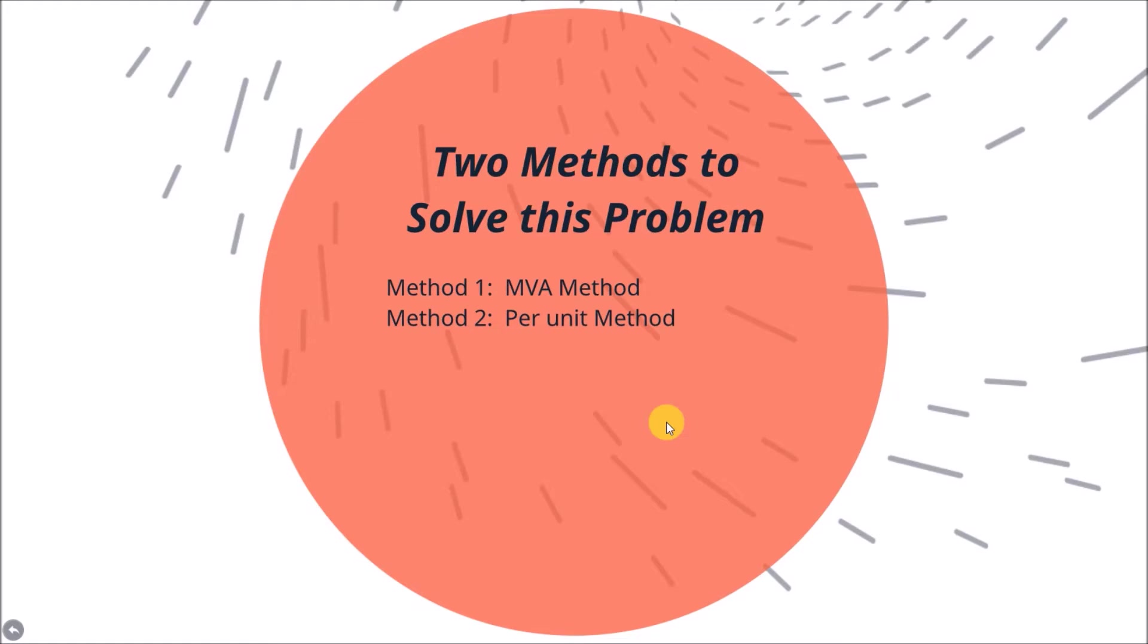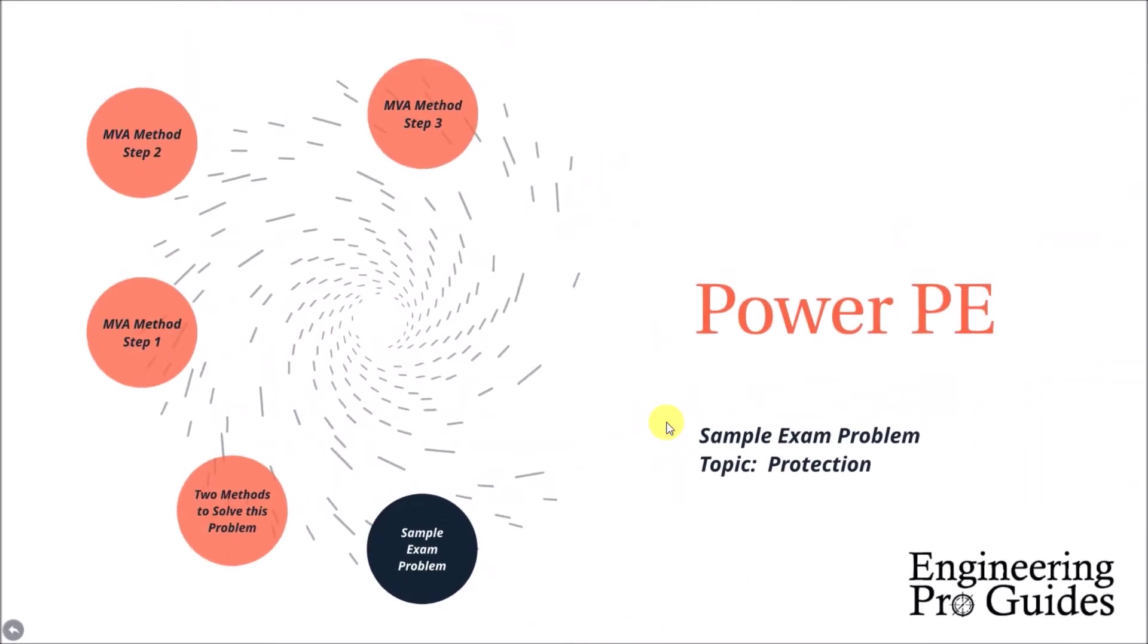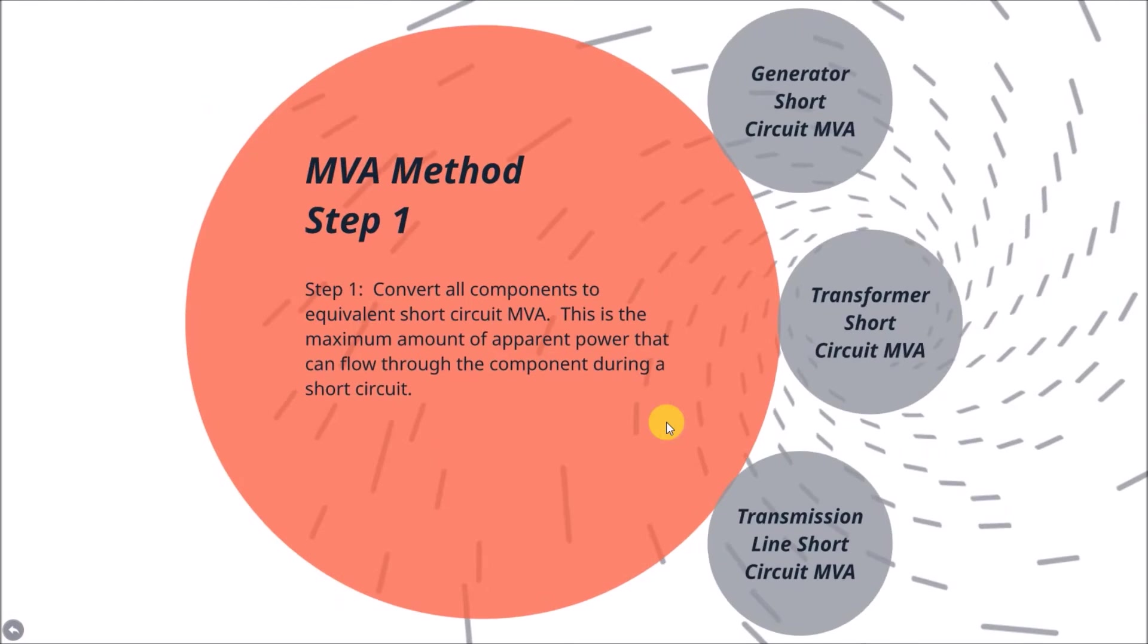The first step in the MVA method is to convert all components' properties to equivalent short-circuit MVA. This is the maximum amount of power that can flow through the component during a short-circuit. Each component has its own way of finding its equivalent short-circuit MVA, which will be covered in the next slide.